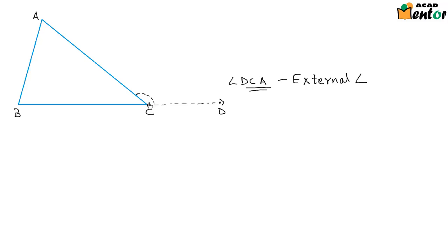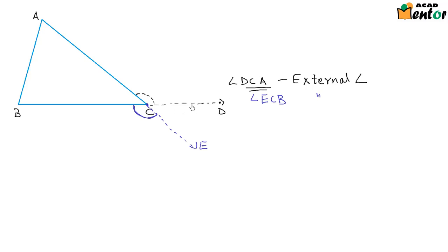There is another way of forming an external angle at point C. Instead of extending BC, you could extend AC to another point E, and the angle ECB formed is also an external angle. If we look carefully, AE and BD are two lines intersecting at C, so angle DCA and angle ECB are vertically opposite angles and hence equal. Either of these can be used as the external angle at C, and since their measures are equal, we can use them interchangeably.